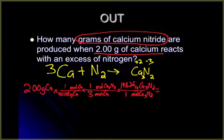Check to make sure everything cancelled. We're left with grams of calcium nitride. Plug into your calculator and solve: 2 times 148.26 divided by 40.08 times 3. Again, three significant figures, so my answer needs to have three. So I'm going to go 2.47 grams of Ca3N2.